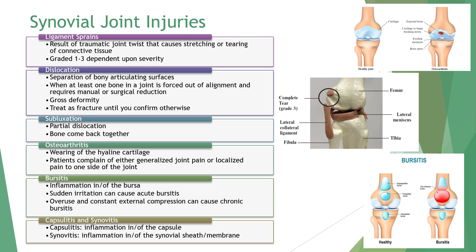Capsulitis is the result of repeated joint trauma. Synovitis can occur acutely but will also develop following the mistreatment of a joint injury. Chronic synovitis can result in edema, thickening of the synovial lining, exudation, and fibrous tissue development. The individual's motion can become restricted and joint noises may develop.